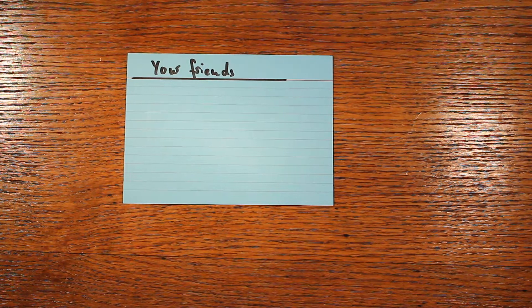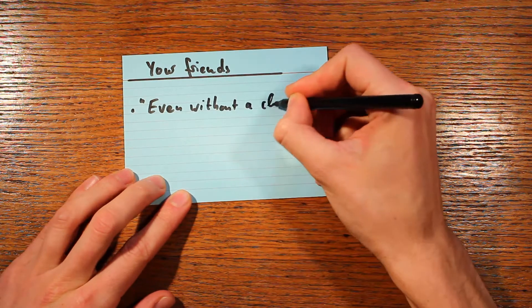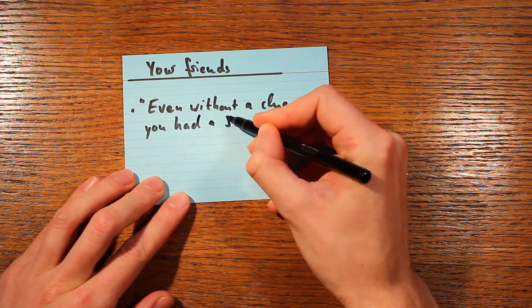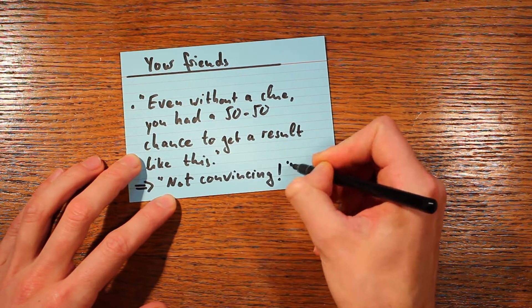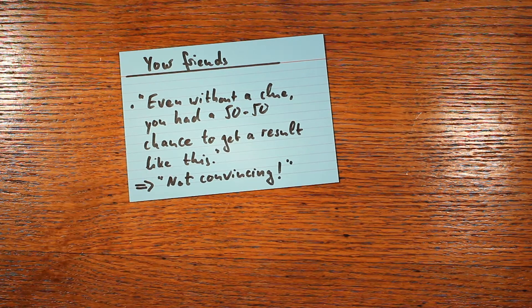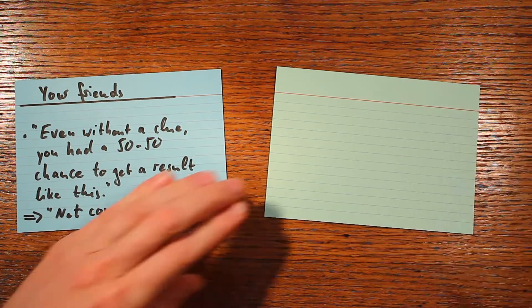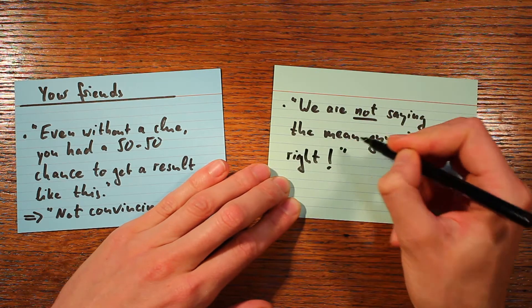The second thing they'll say is: we are really not convinced, because even if you have no clue what you're talking about, you'd still have a 50-50 chance of predicting this one match right, so we are not convinced. But your friends will want to be fair, so they'll probably acknowledge that they don't necessarily agree with the mean guy who said you don't know anything — it's just that they can't tell yet.